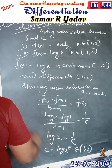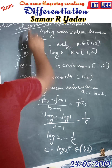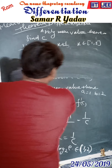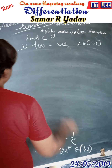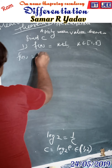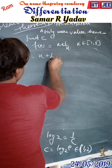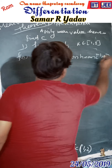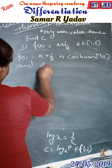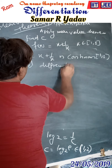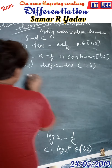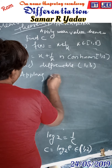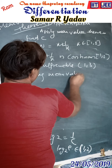This is how we solve this numerical — finding the value of c using the Mean-Value Theorem. Now for the next numerical: f(x) = x + 1/x is continuous on [1, 3] and differentiable. We apply the Mean-Value Theorem.